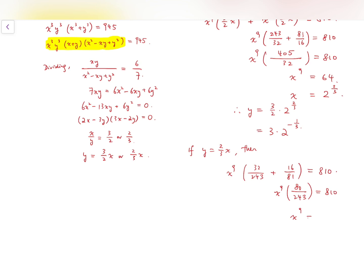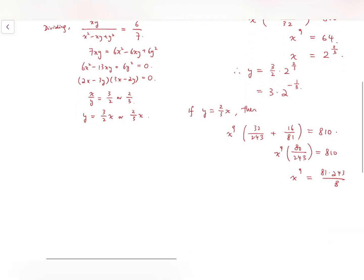Then x to the power 9 times 80 over 243 equals 810. So x to the power 9 equals 81 times 243 over 80. Notice that 81 is 3 to the power 4, while 243 is 3 to the power 5, so we have 3 to the power 9 at the top and 8 at the bottom. For 8, I'm going to rewrite that as 2 cubed. Then x will be equal to 3 times 2 to the power minus 1 over 3, which is the same as what we got for y in the first case.